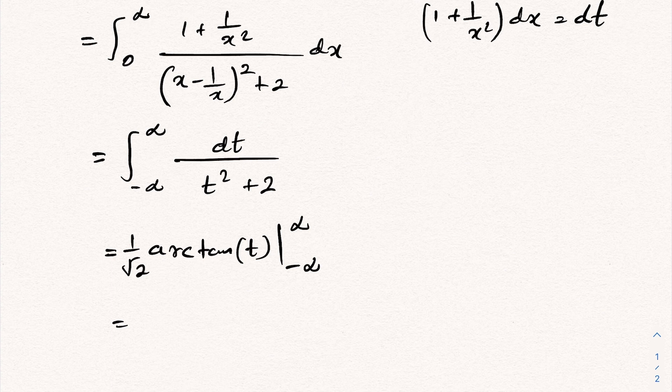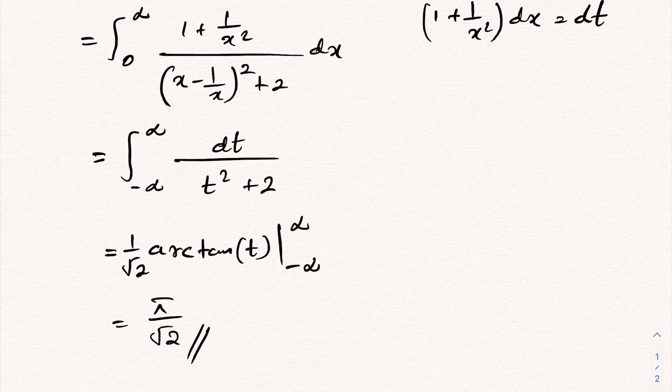So minus minus plus π over 2 plus π over 2 gives us π. Therefore we have π over square root of 2. This is the answer. Thank you for watching.